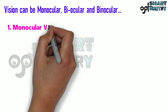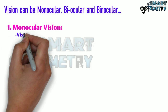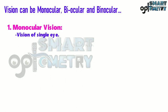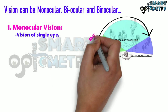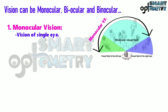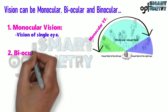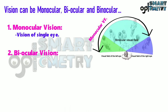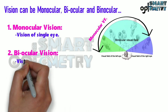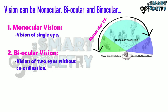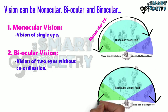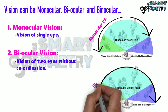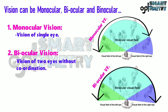1. Monocular vision: it is the vision of a single eye. Here you can see the monocular visual field. 2. Biocular vision: it is the vision of two eyes without coordination. This is the biocular visual field.